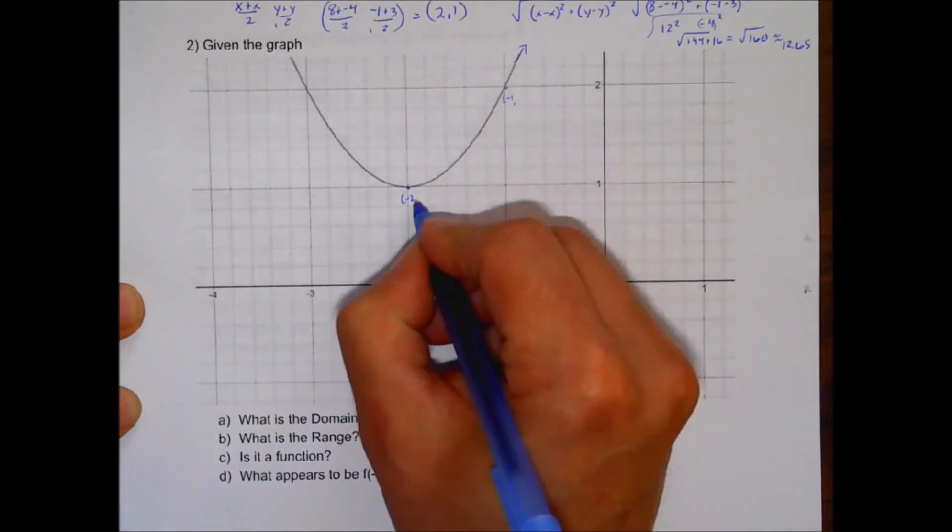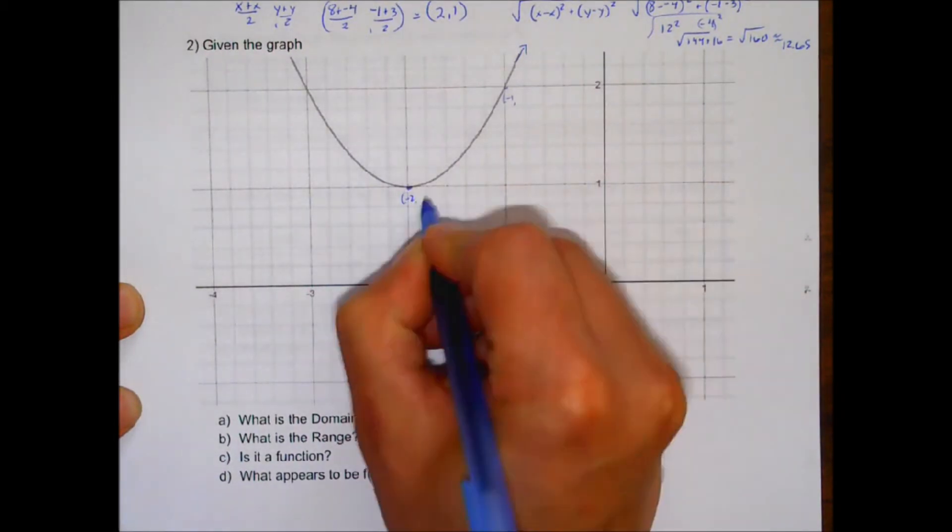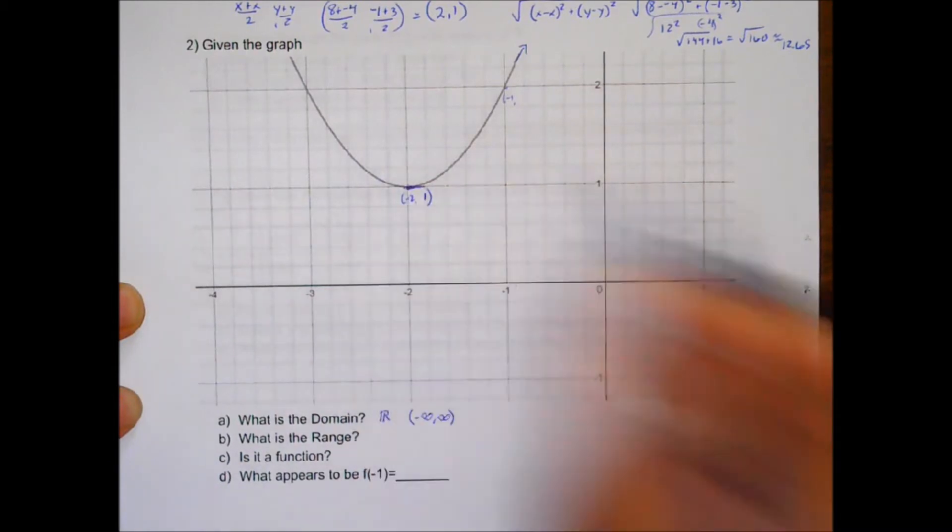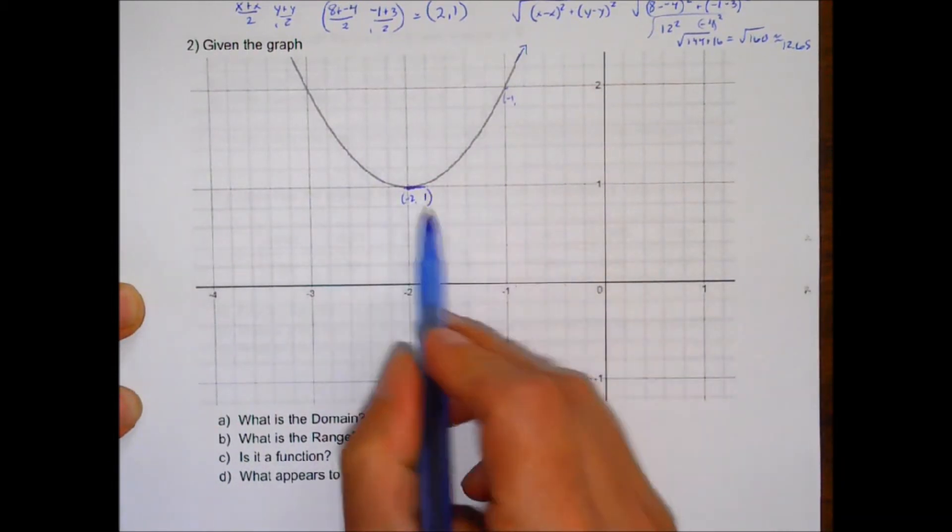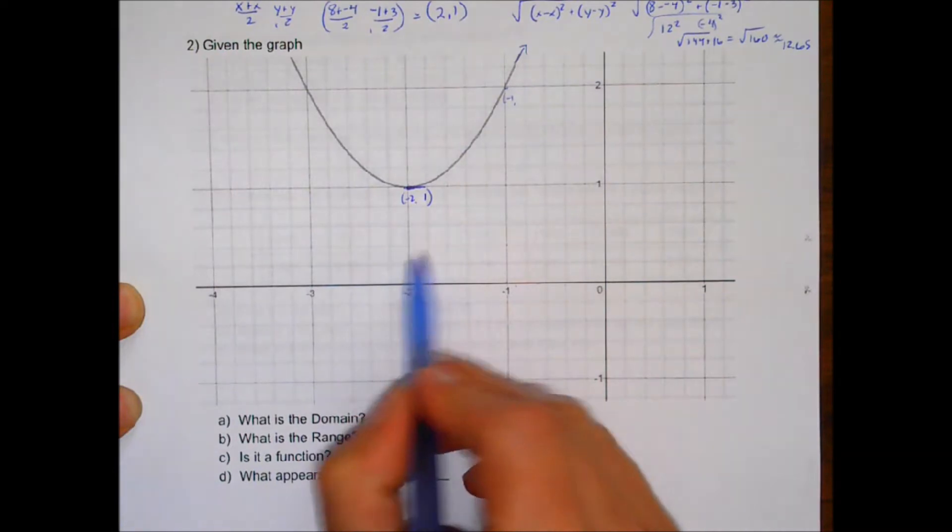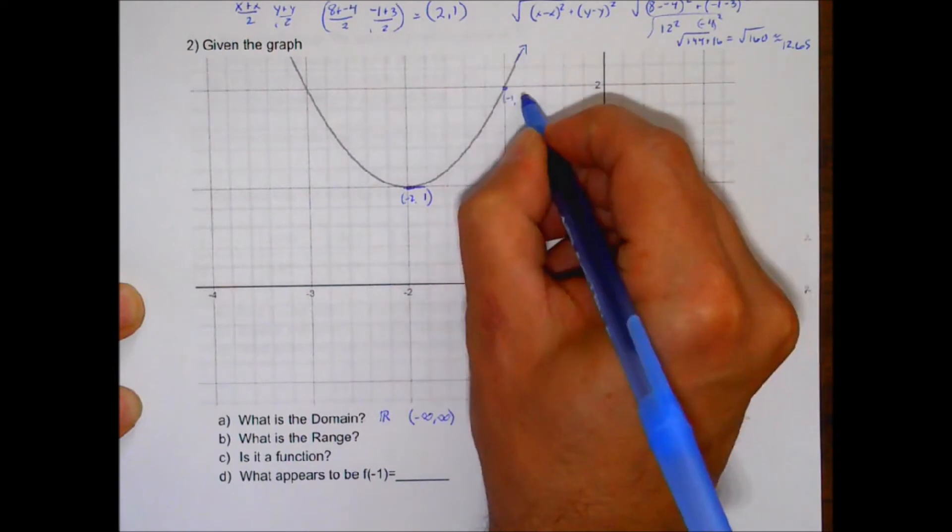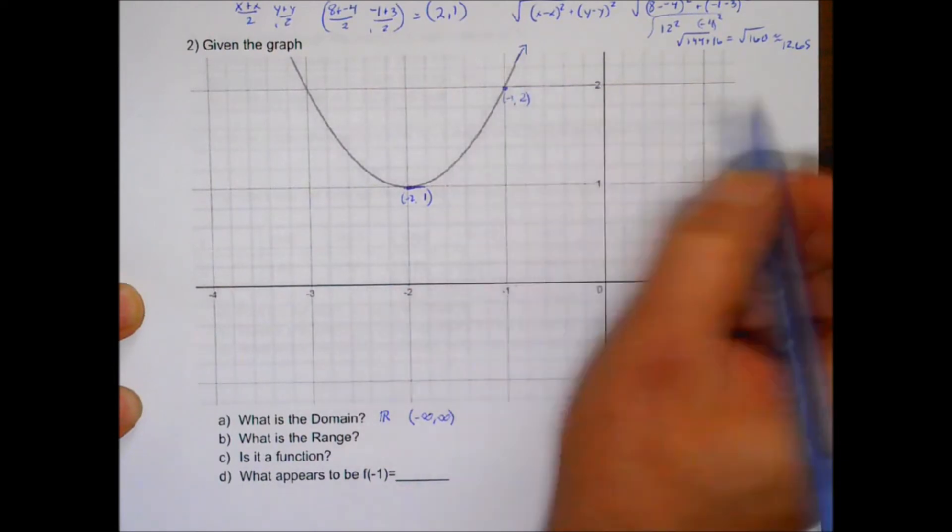Now the range are your y values. So your y for this point has a y of 1. So we have a y of 1 here. And we don't have any more y values that are below 1, but we do have y values that are above 1. So for example, this point right here has a y of 2. Up here, we would have a point up here that would have a y of 3.